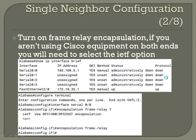The first thing we want to do is turn on Frame Relay encapsulation. If you aren't using Cisco equipment on both ends, you'll need to select the IETF option. Do a 'show ip interface brief' to see your interfaces — serial is currently down/down but has an IP configured. Go into config t, interface serial 0/0/0, and enter 'encapsulation frame-relay'. The IETF option is only needed if you're not using Cisco on both sides; since we are, we just use 'encapsulation frame-relay'.